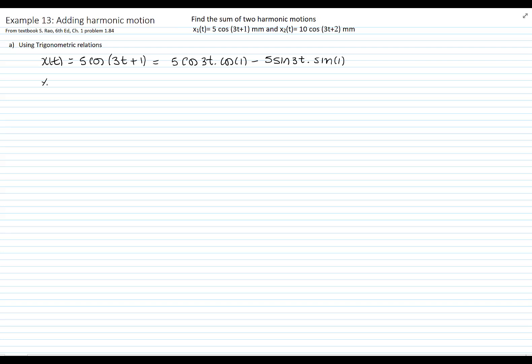The second function that we want to add is 10 cosine of 3t plus 2 equals 10 cosine of 3t cosine of 2 minus 10 sine of 3t sine of 2.